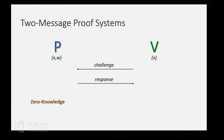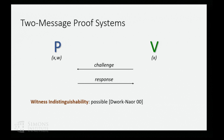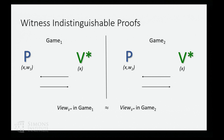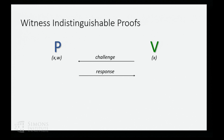Another property that we typically want out of proof systems is some sort of privacy. Zero-knowledge, unfortunately, is impossible in this two-message setting unless we rely on a trusted setup. What is known to be possible is a weaker yet simple property called witness indistinguishability. This guarantees that the view of a malicious verifier interacting with a prover does not reveal the witness the prover is using. The guarantee is that the verifier's view in game one, where the prover uses witness W1, should be indistinguishable from its view in game two, when the prover uses witness W2.